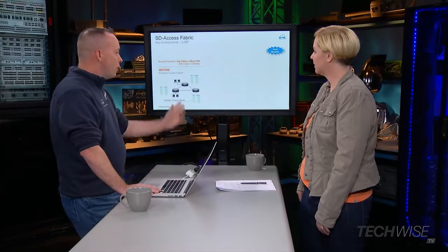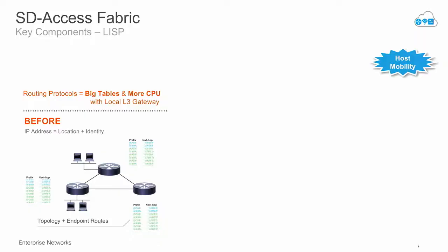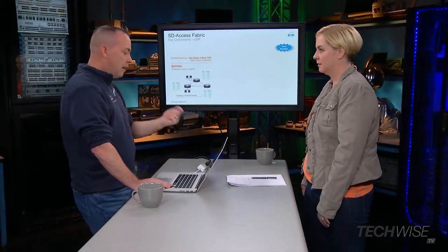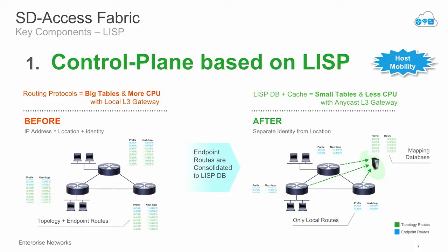Let's look a little bit closer at each one, starting with the control plane. The real goal of LISP is to simplify your routing, to create that overlay network. The problem with traditional routing protocols is they're very heavy — we've been doing it for 20, 30 years, but I have to keep track of every single address, and anytime something changes, I have to update that address. It takes up CPU and all these things. One of the main reasons to go with LISP is that it actually separates the host addresses from the topology addresses.